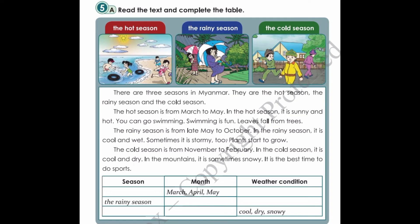The rainy season is from late May to October. In the rainy season, it is cool and wet. Sometimes it is stormy too. Plants start to grow. The cold season is from November to February.